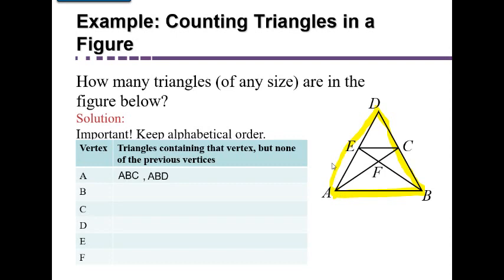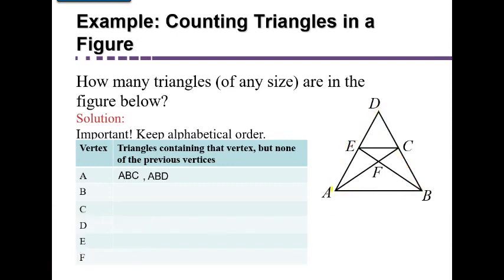Next we check A, B, E. Going from A to B, then to E, and back to A — yes, that is a triangle, so we list A, B, E. Then we check A, B, F. Going from A to B, then to F, and back to A — that is also a triangle in our diagram, so we list A, B, F. There's no letter after F, so we're done with the A, Bs.